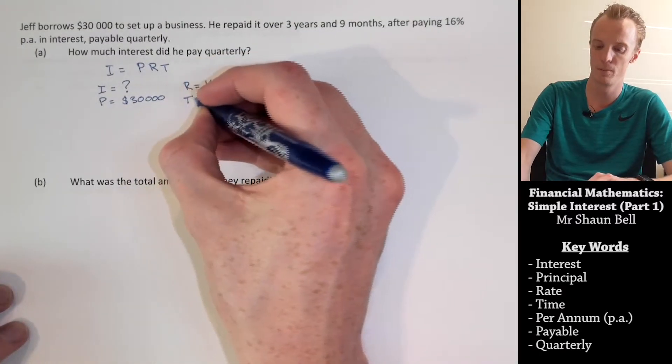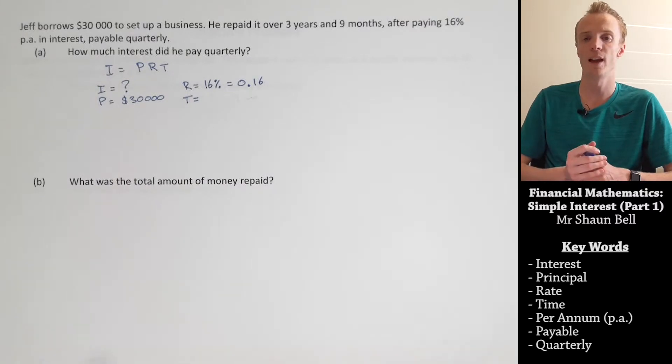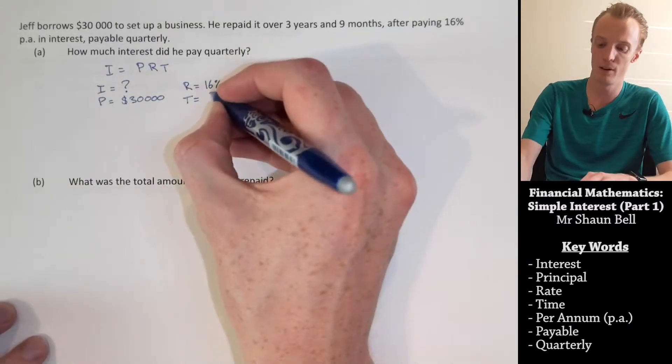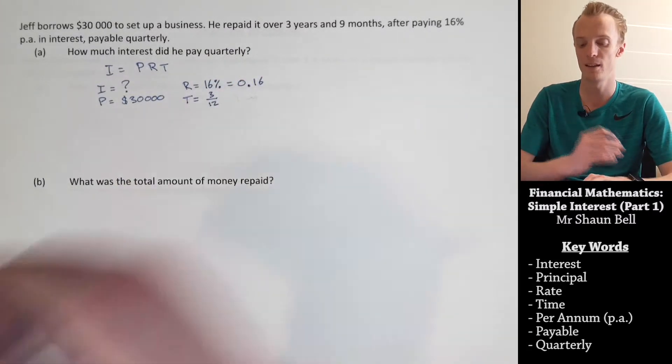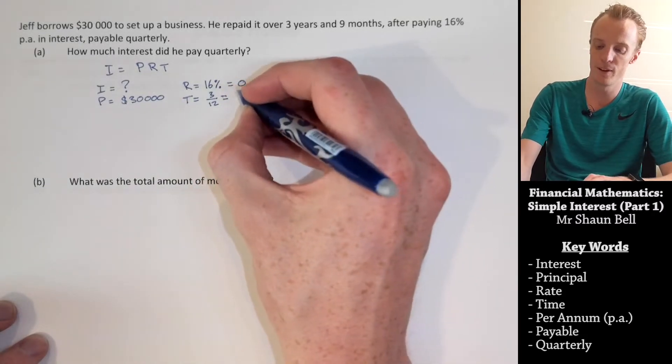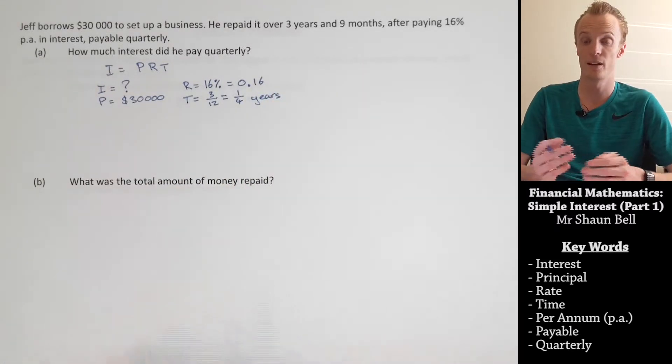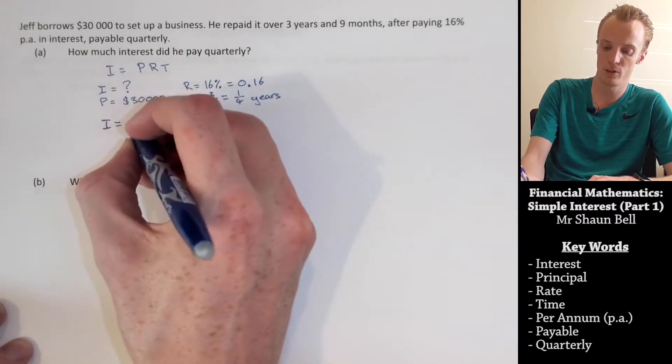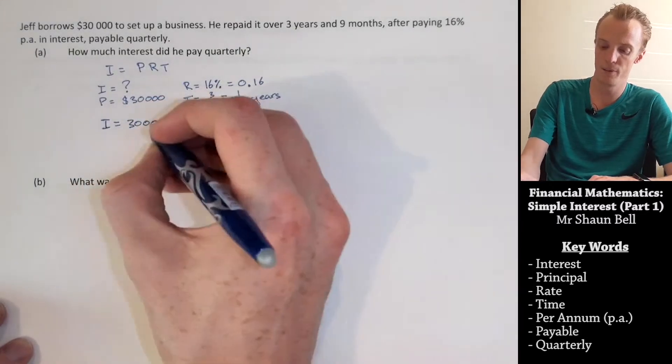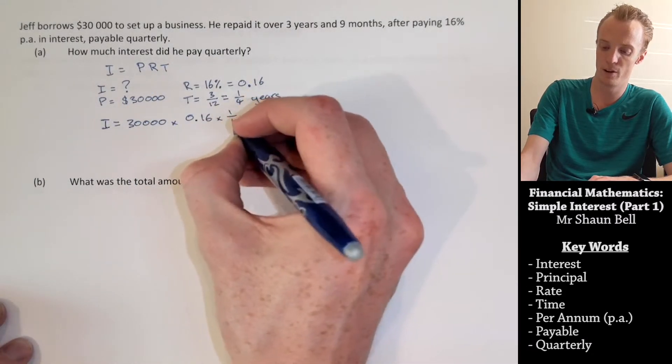Now, the time is a little bit different in this problem. Because we're looking at how much did he pay quarterly, or how much did he pay each quarter, we're only looking at one quarter of the year. Now, one quarter of the year is going to be equal to three months. To work out that in years, we need to divide that by 12, because there's 12 months in the year. Now, we can simplify this fraction to be one out of four years. So now, we substitute these values back into our formula. So, we don't have I, so we leave it as I. We do have the principal, which is 30,000. We have the rate, which is 0.16. And we have the time, which is 1 over 4.